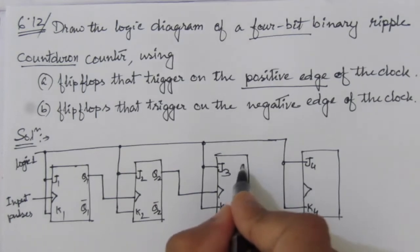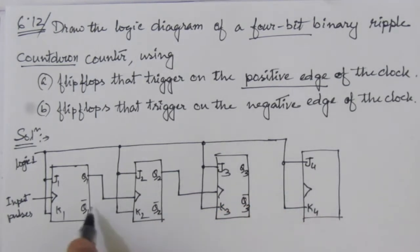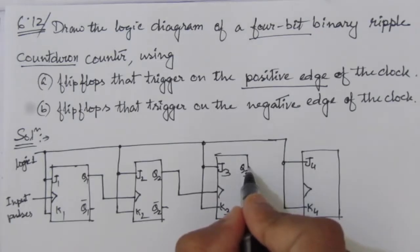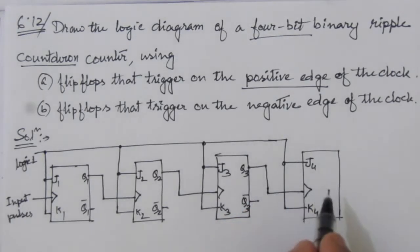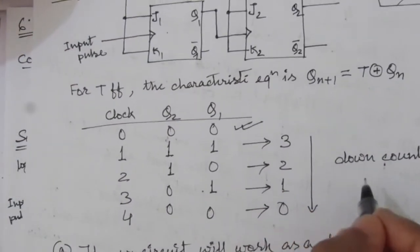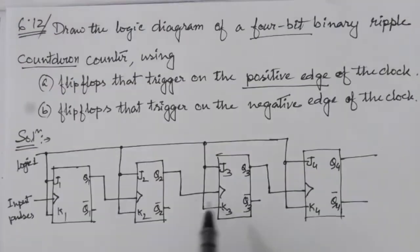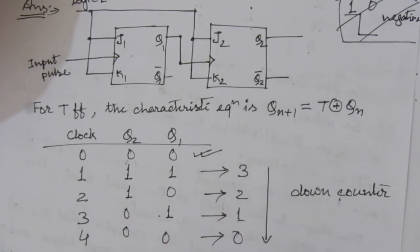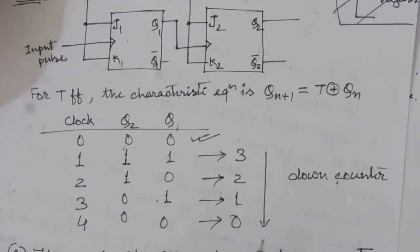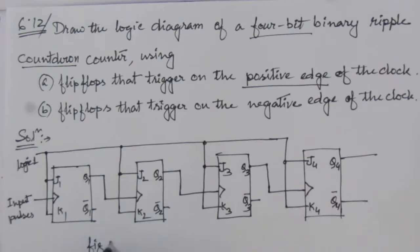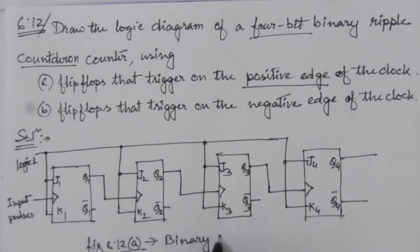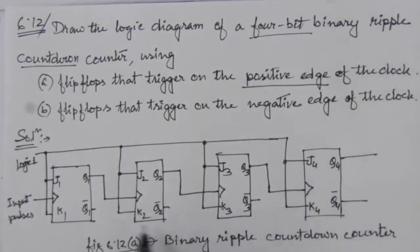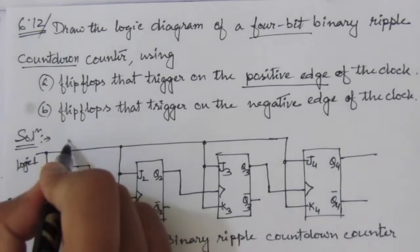The third flip-flop output Q3 is connected to the clock input of the fourth flip-flop, and Q2 connects to the third. So we have Q1 complement, Q2 complement, Q3 complement as the complemented outputs, and the normal Q3 output feeds the fourth flip-flop clock. The fourth flip-flop outputs Q4 and Q4 complement. Starting from 1111, this counter will decrement by 1 bit at a time, working as a down counter. This is Figure 6.12a — the binary ripple countdown counter.